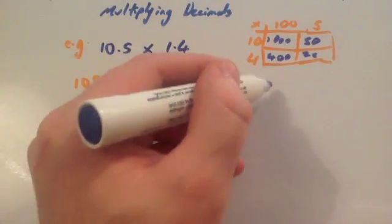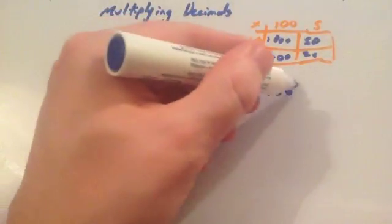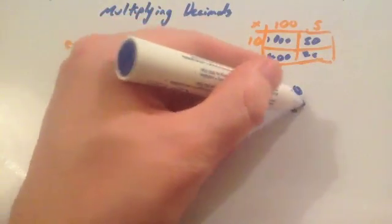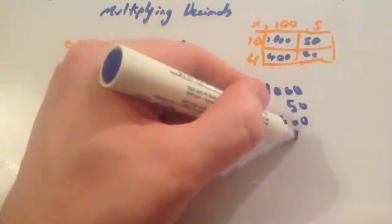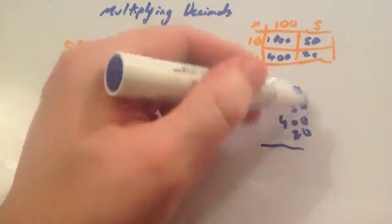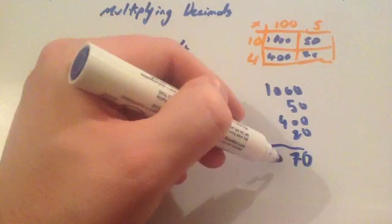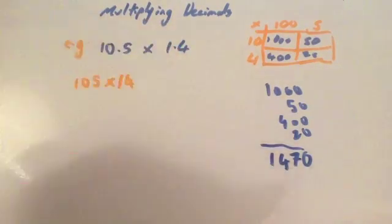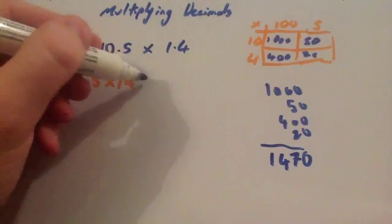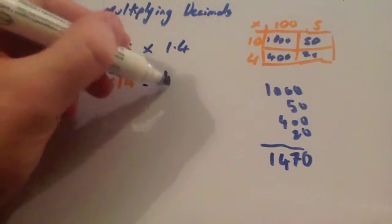Using the grid method for 105 multiplied by 14: 1 times 1 is 1 with three zeros giving 1,000; 1 times 5 is 5 with one zero giving 50; 4 times 1 is 4 with two zeros giving 400; and 4 times 5 is 20. Then we add those numbers up: 1,000 plus 50 plus 400 plus 20 equals 1,470. So 105 multiplied by 14 equals 1,470.